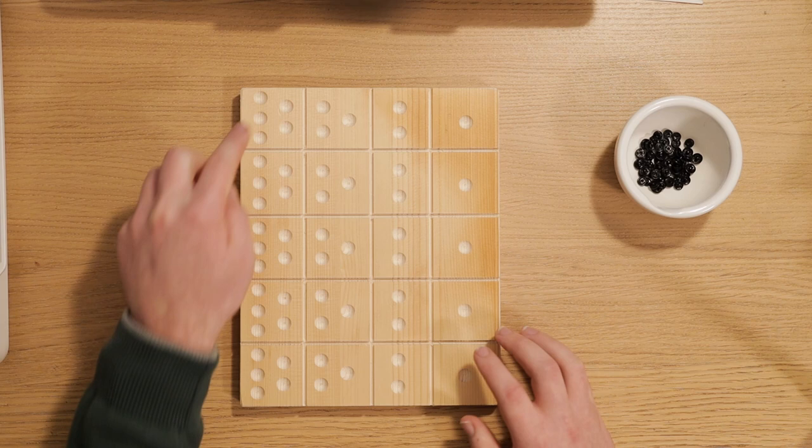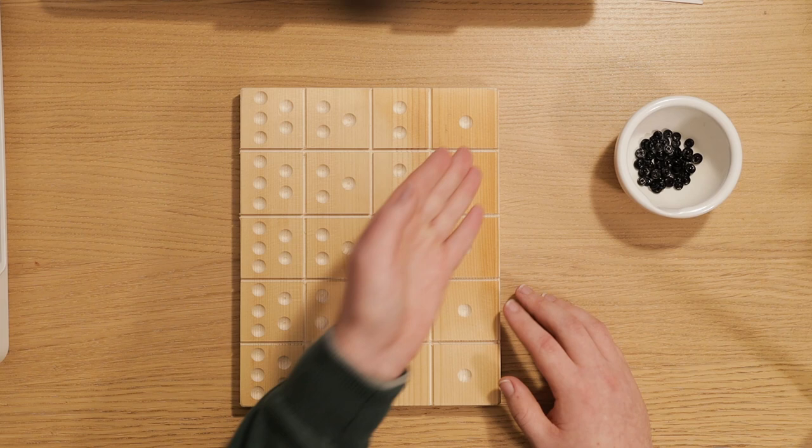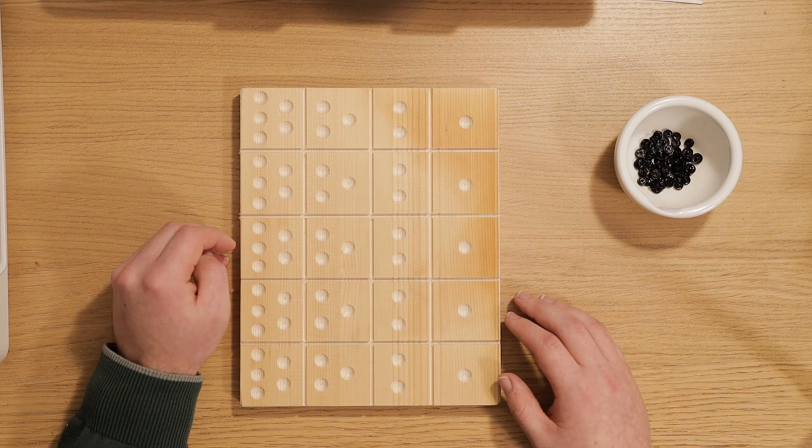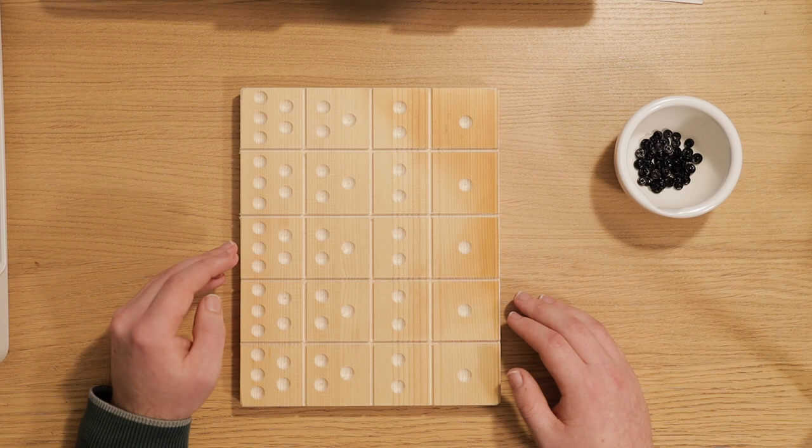Basically, a Yupana is a tablet made of wood or stone that has compartments and grooves in it. This example has four columns and five rows, although the number of rows is flexible and can be extended to enable the calculation with higher numbers.